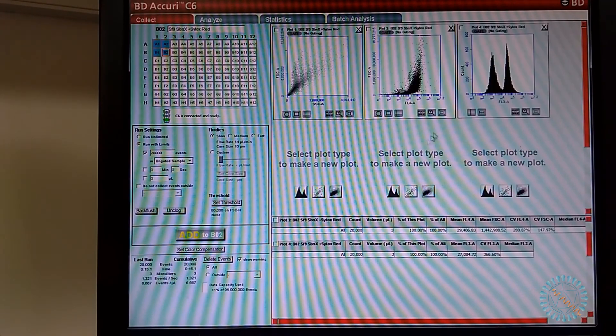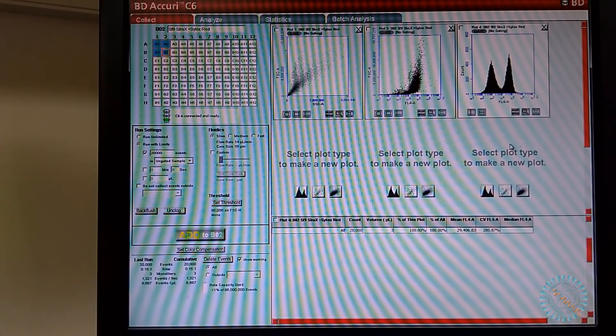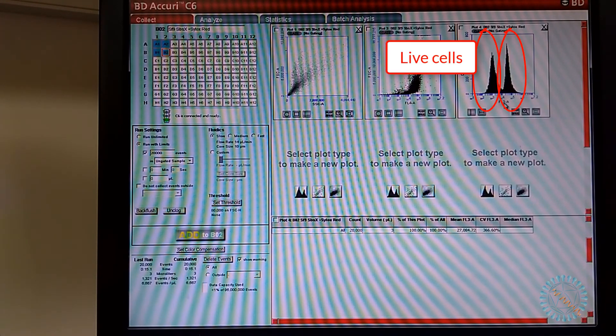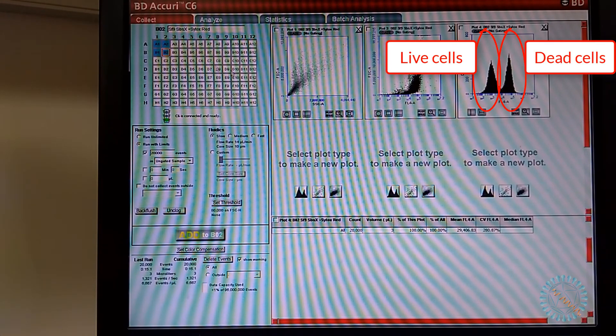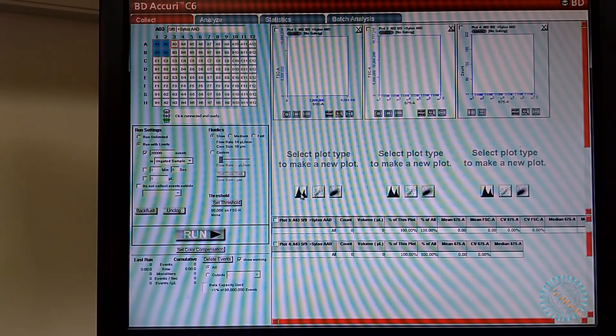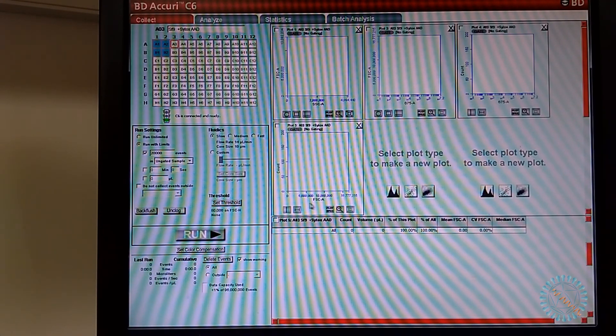So there you have it. A brief introduction on how to run the Accuri C6 flow cytometer. As you can see in the graph on the top right corner, we can already see two populations of cells, the dead ones and the alive ones. In the next video, I will show you how to analyze the data. For now, I just want to say thank you. Please leave a comment and I will see you next time.